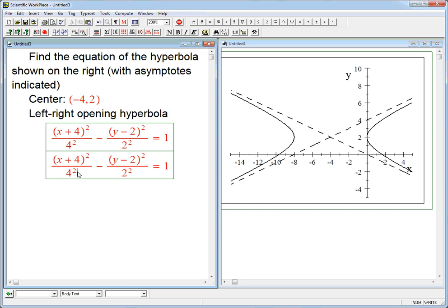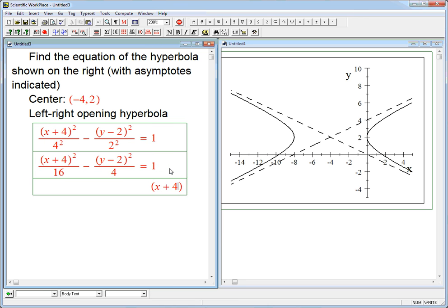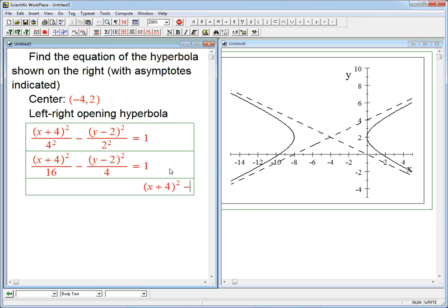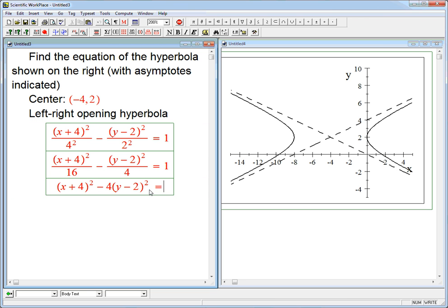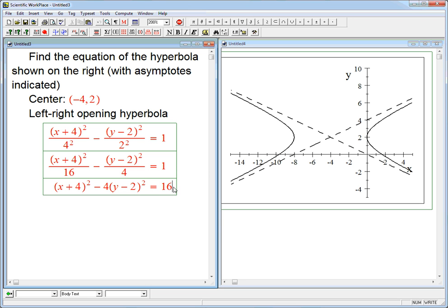Well, that's just a 16. That's a 4. And I can multiply everything by 16. So (x + 4)² - 4(y - 2)² = 16. That's a little prettier, but most people who know about hyperbolas would say, actually, I prefer this because I can read off the a and the b easier from the standard form.